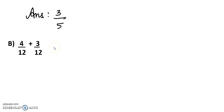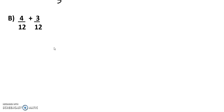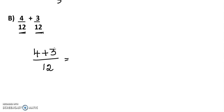Next: 4/12 plus 3/12. This is also a like fraction because the denominators are the same. We add the numerators alone: 4 plus 3 equals 7, and the common denominator is 12. So the answer is 7/12.